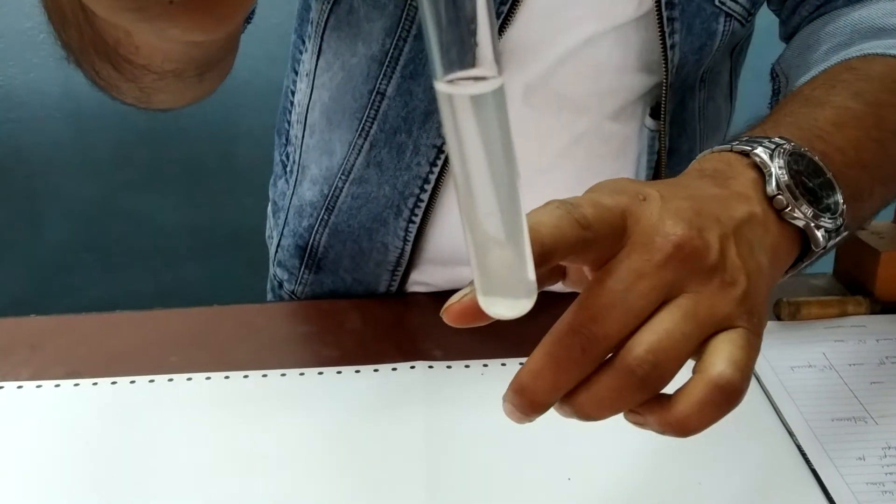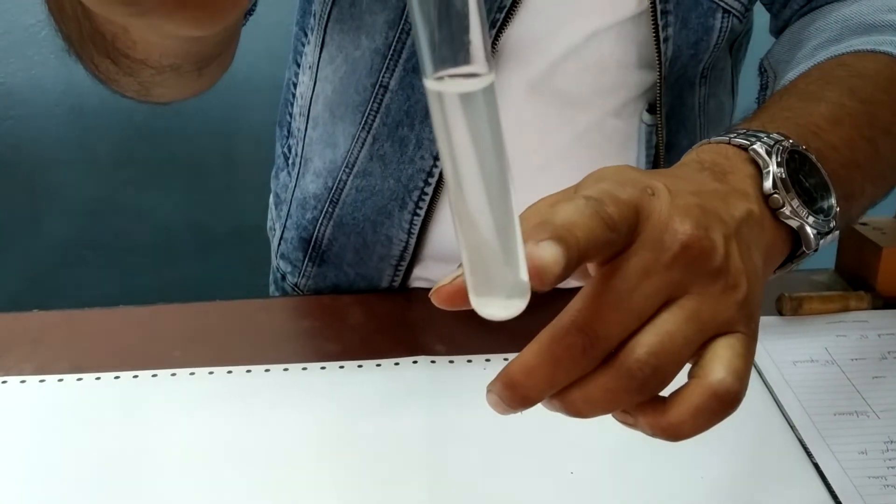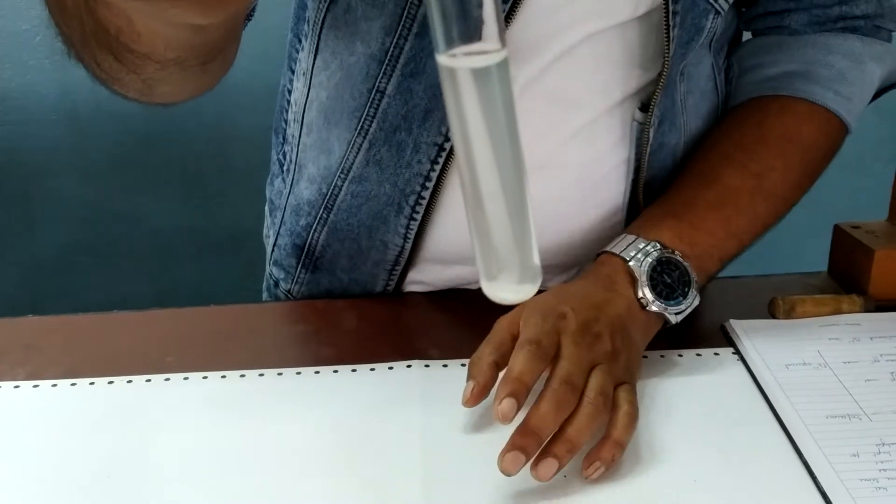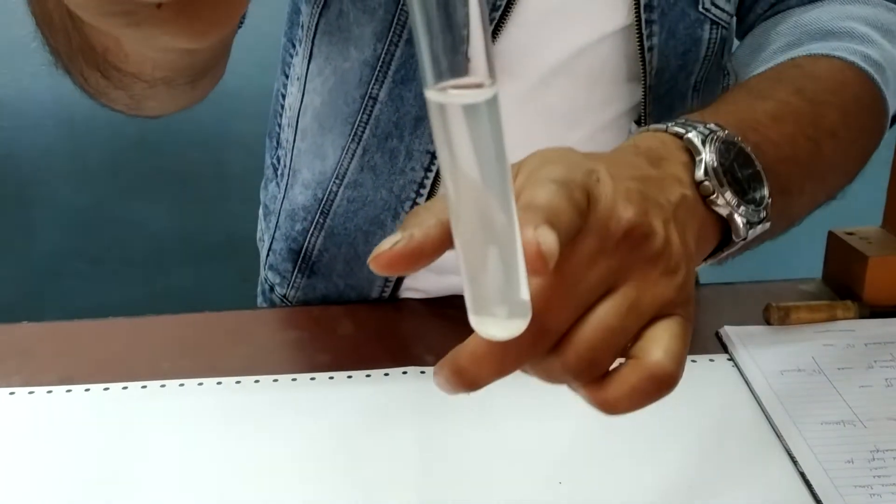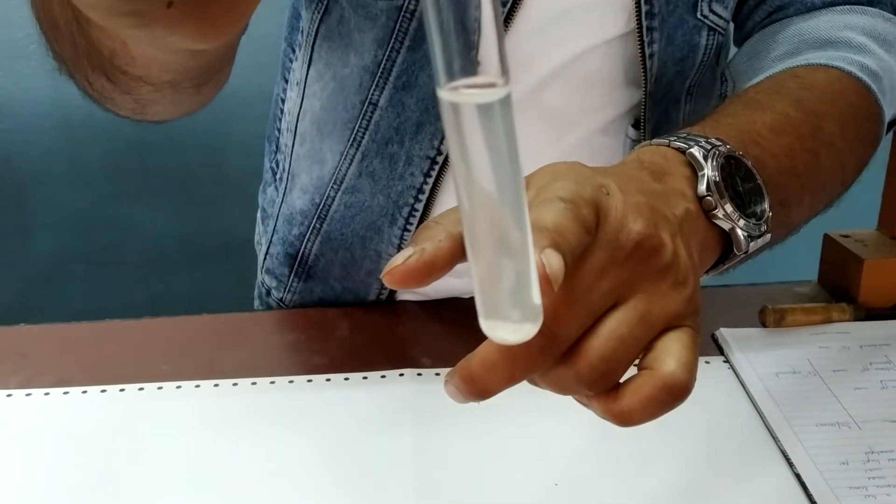After adding HCl as you can see the white colored PPT is there. With this PPT we will perform the test for lead.